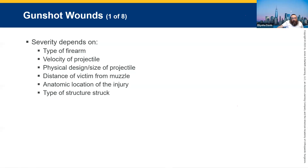A lot of this doesn't make sense to us coming in as EMS — it's impossible to know. The type of firearm does make some difference: if it's a shotgun versus a nine millimeter. The velocity of the projectile you're not going to know, because every single manufacturer and every single gun is slightly different in design or size of the projectile. A shotgun is going to leave a huge hole, while a nine millimeter entry wound is actually very small.